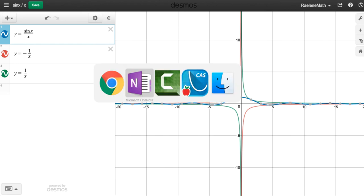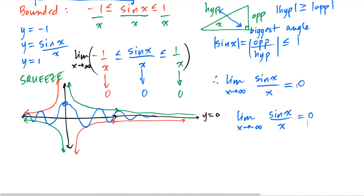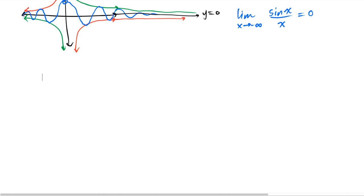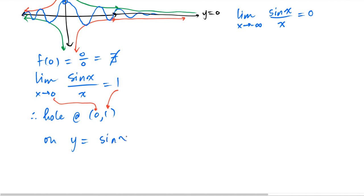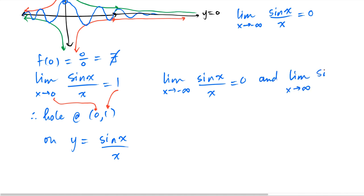Looking at the graphical, numerical, and algebraic behavior of this function gives us important results. Namely, the limit as x approaches 0 of sine x over x is equal to 1. Since f of 0 does not exist — it's undefined because we have an indeterminate value — but the limit value does exist, this tells us we have a hole at (0, 1) on the graph of y equals sine x over x. Furthermore, the end behavior limits as x approaches negative infinity or positive infinity are both equal to 0, giving us a horizontal asymptote of y equal to 0 on both sides. Thanks for checking out Raylene Math.